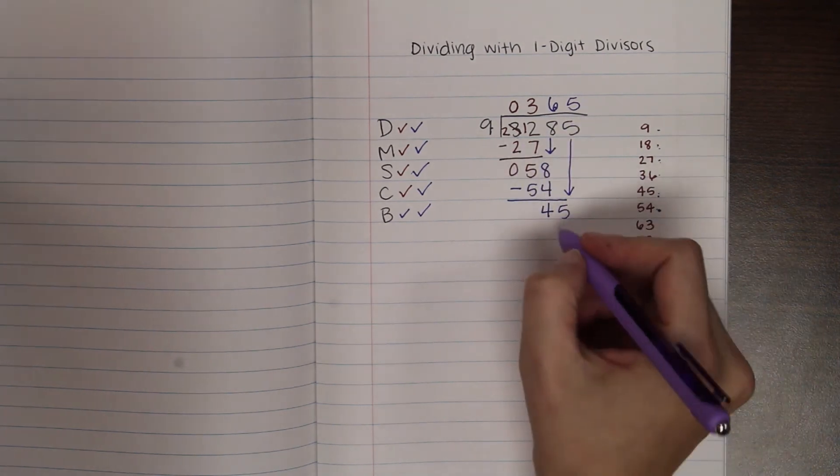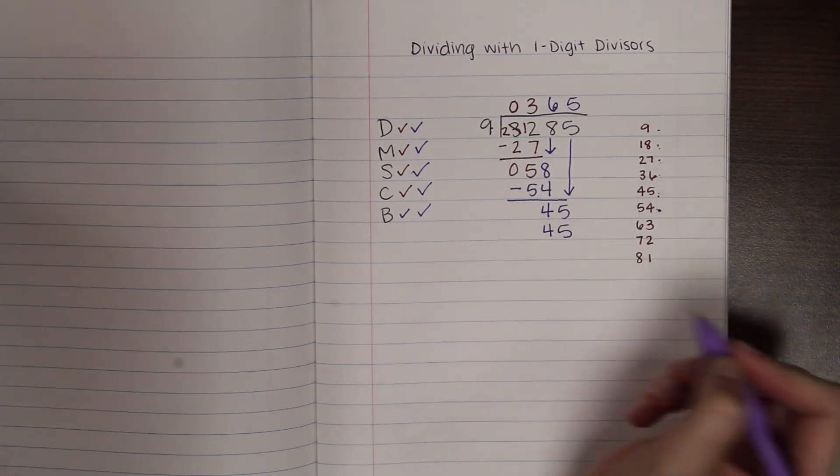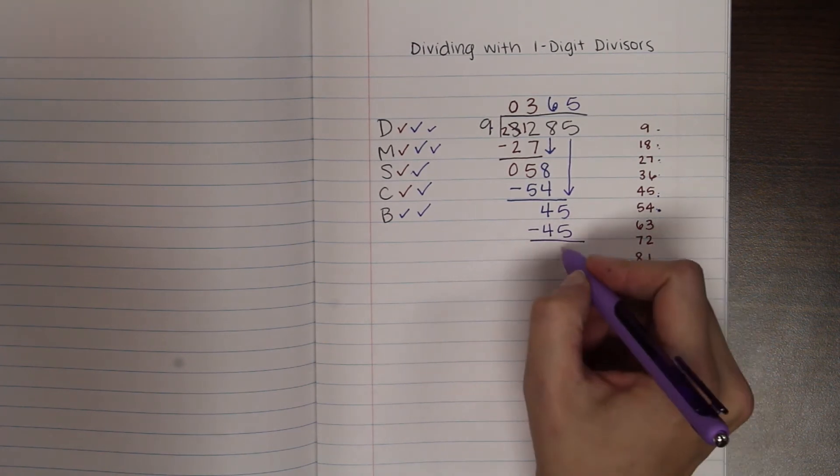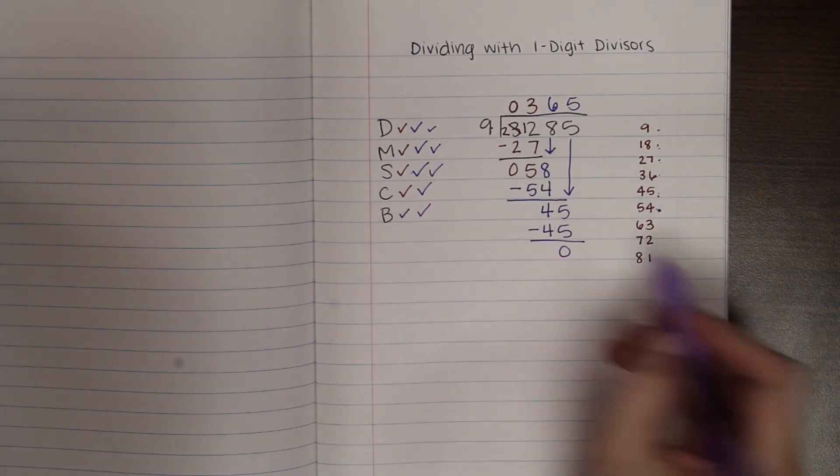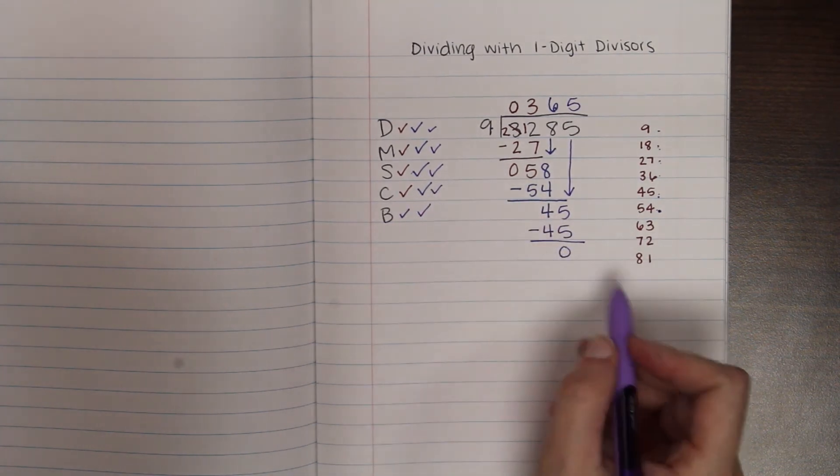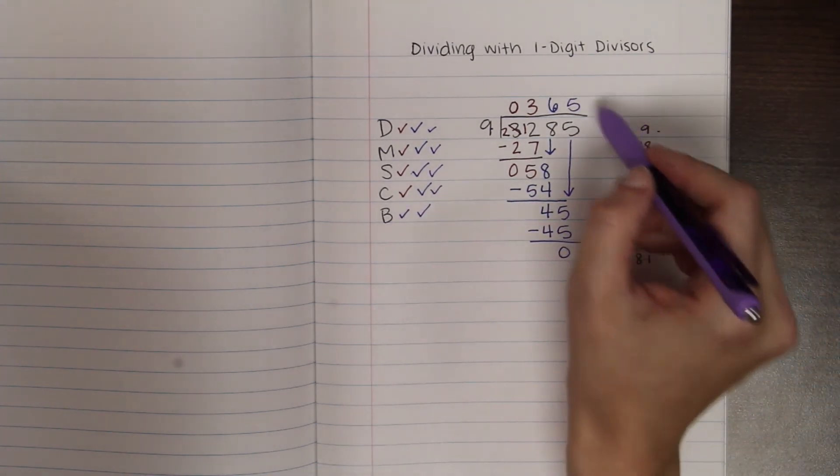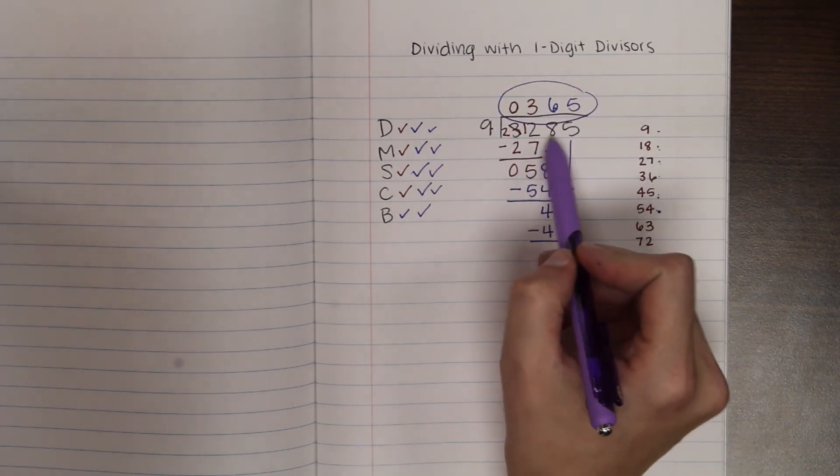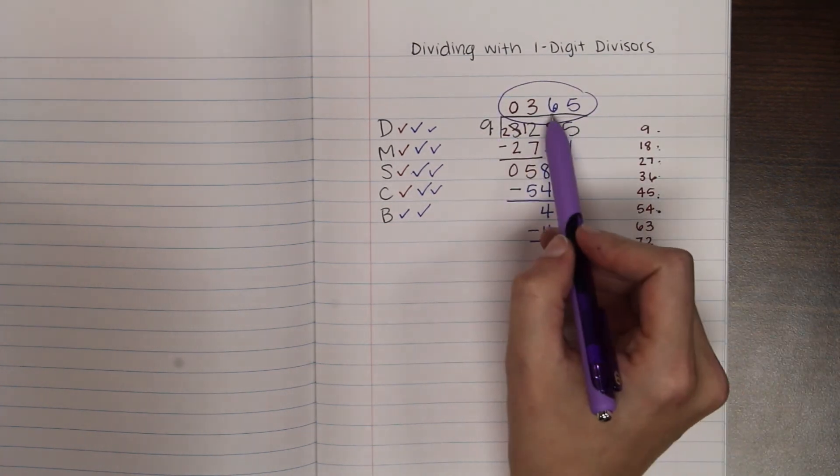So 9 times 5 gives me 45. That's my multiplication. And when I subtract, I end up with my nice remainder of 0. I compare. Of course, that's less than 9 because it's 0. And there's nothing to bring down. So this is the end of my problem. And my answer is always up here. So 3,285 divided by 9 gives me 365.